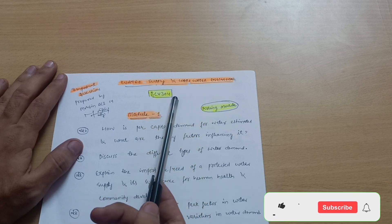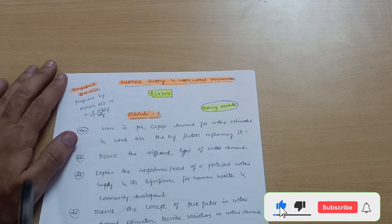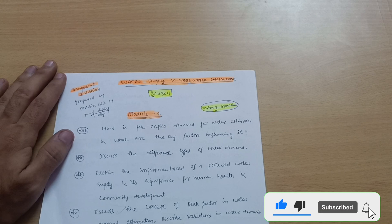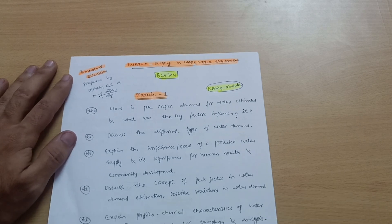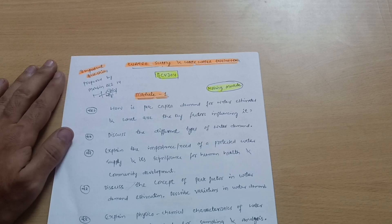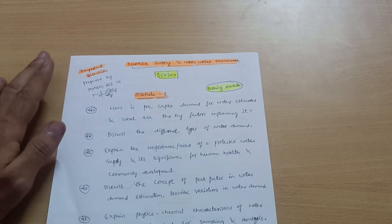The subject code is B Civil 304. Let me tell you first, there are some numericals. You can neglect the numerical part from the first module, but the rest of the modules have certain numericals. I suggest you focus on all five modules. First, I will discuss the passing modules.